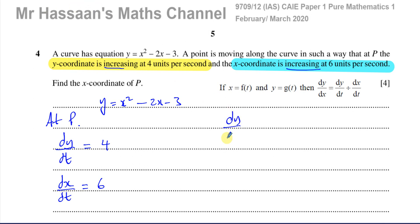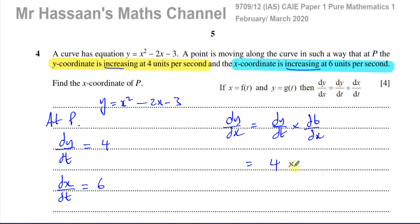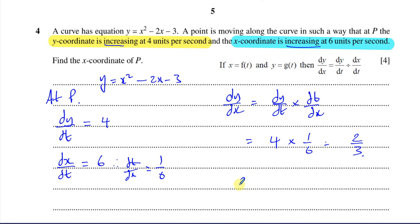We can write dy/dx as dy/dt times dt/dx — it's the same thing, since dividing by a fraction means multiplying by its reciprocal. The dt's cancel, leaving dy/dx. We know dy/dt is 4, and dx/dt is 6, so dt/dx is 1 over 6. Therefore dy/dx equals 4 times 1 over 6, which gives us 2 thirds.